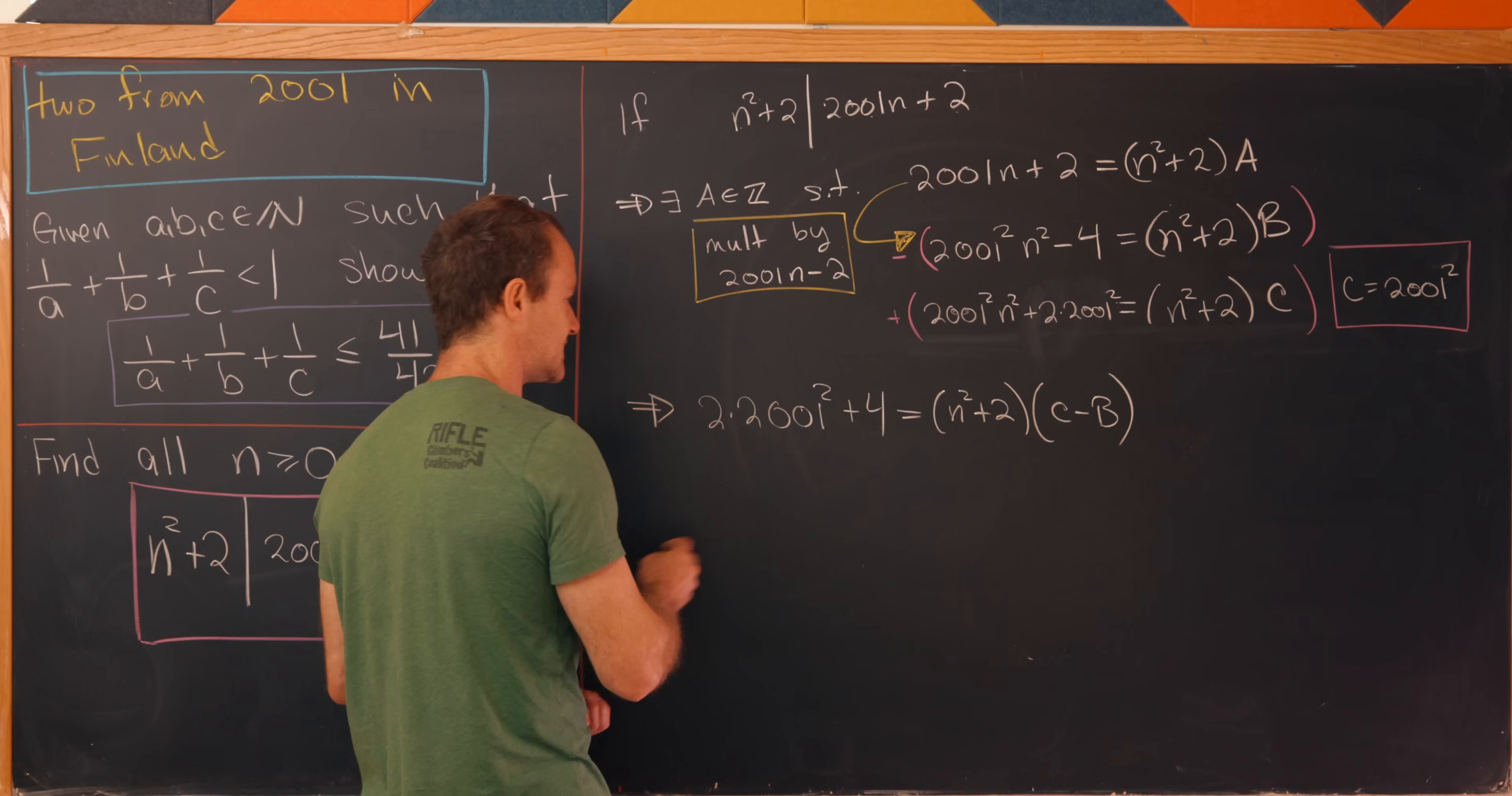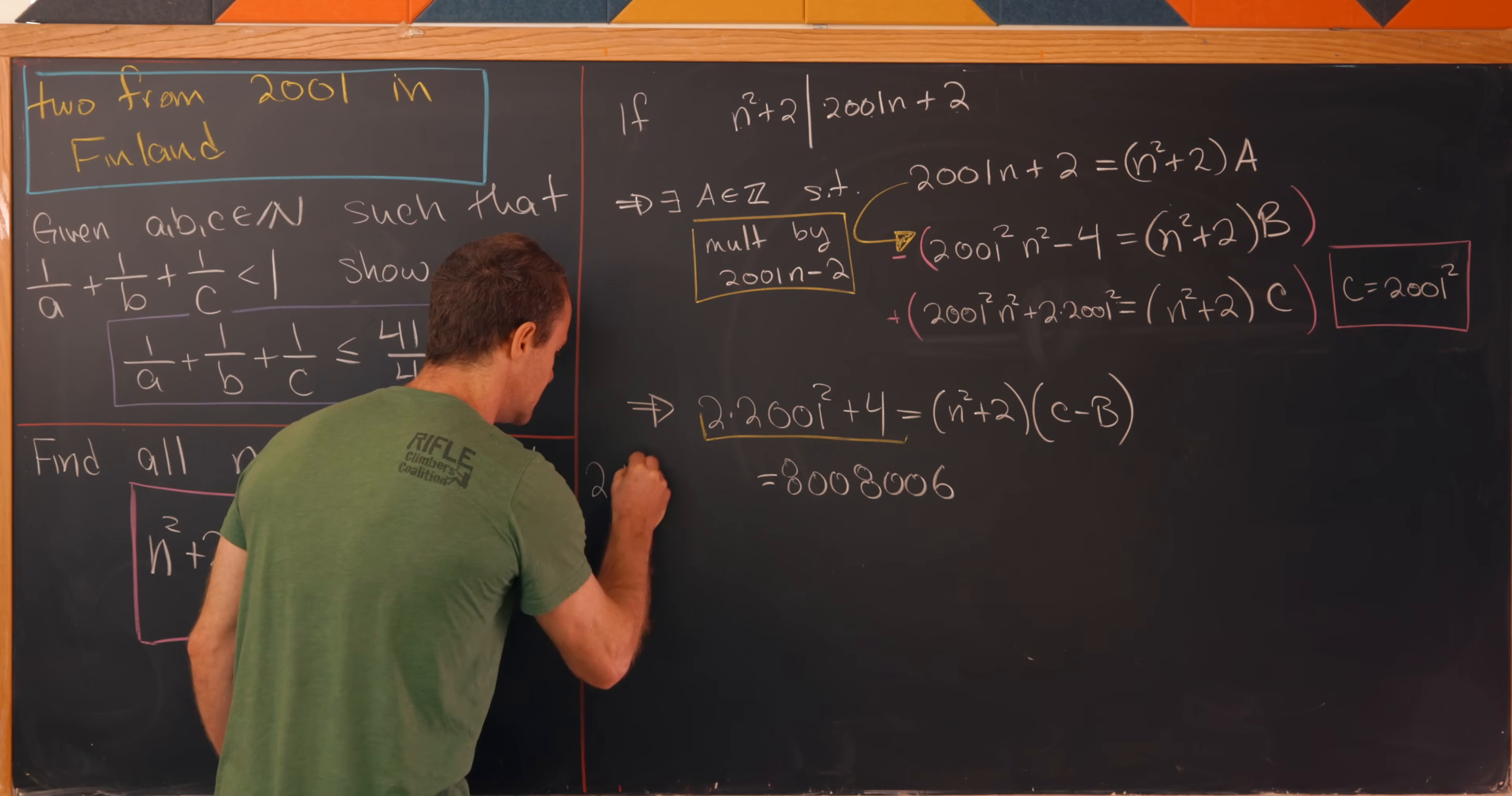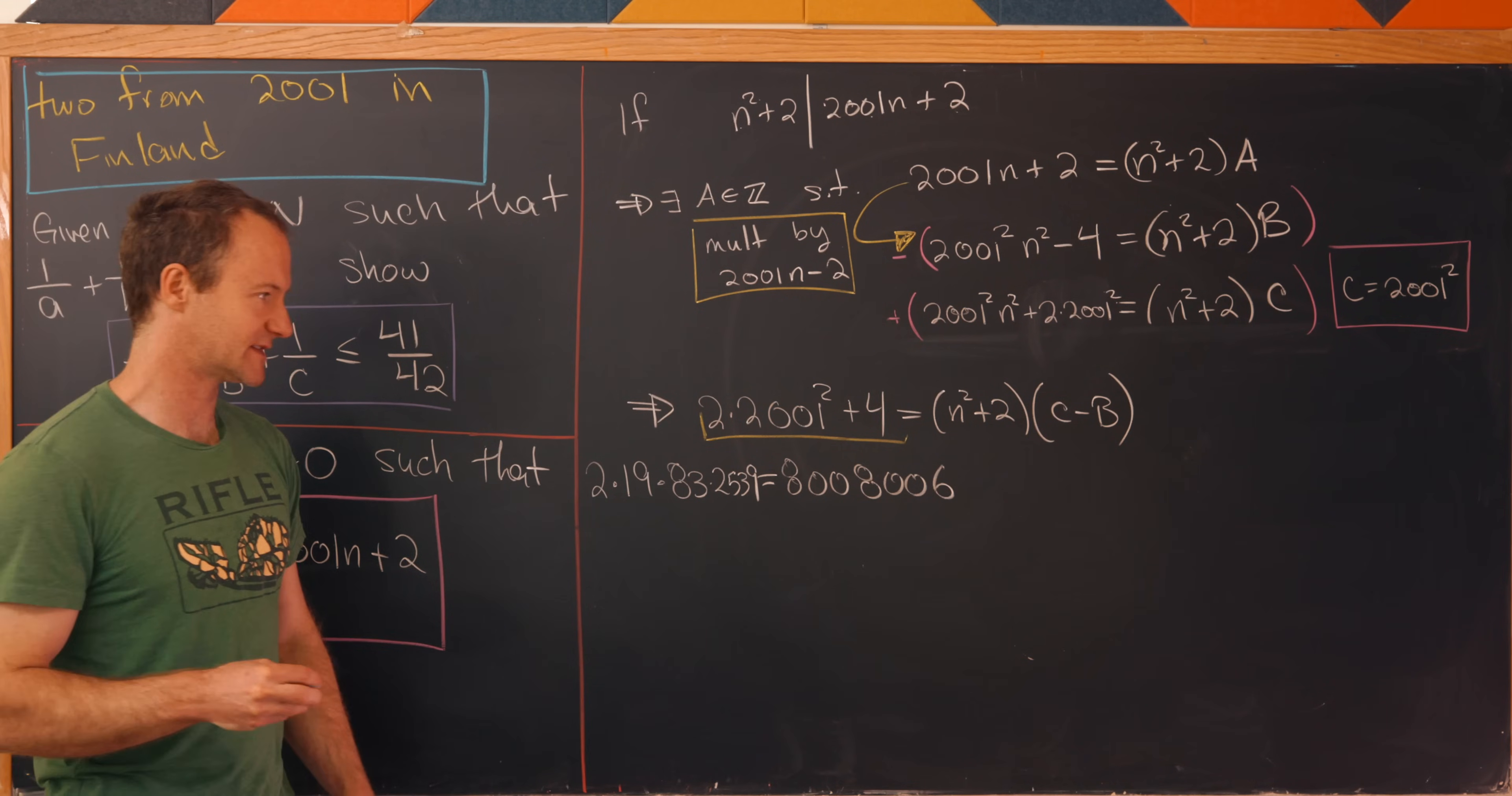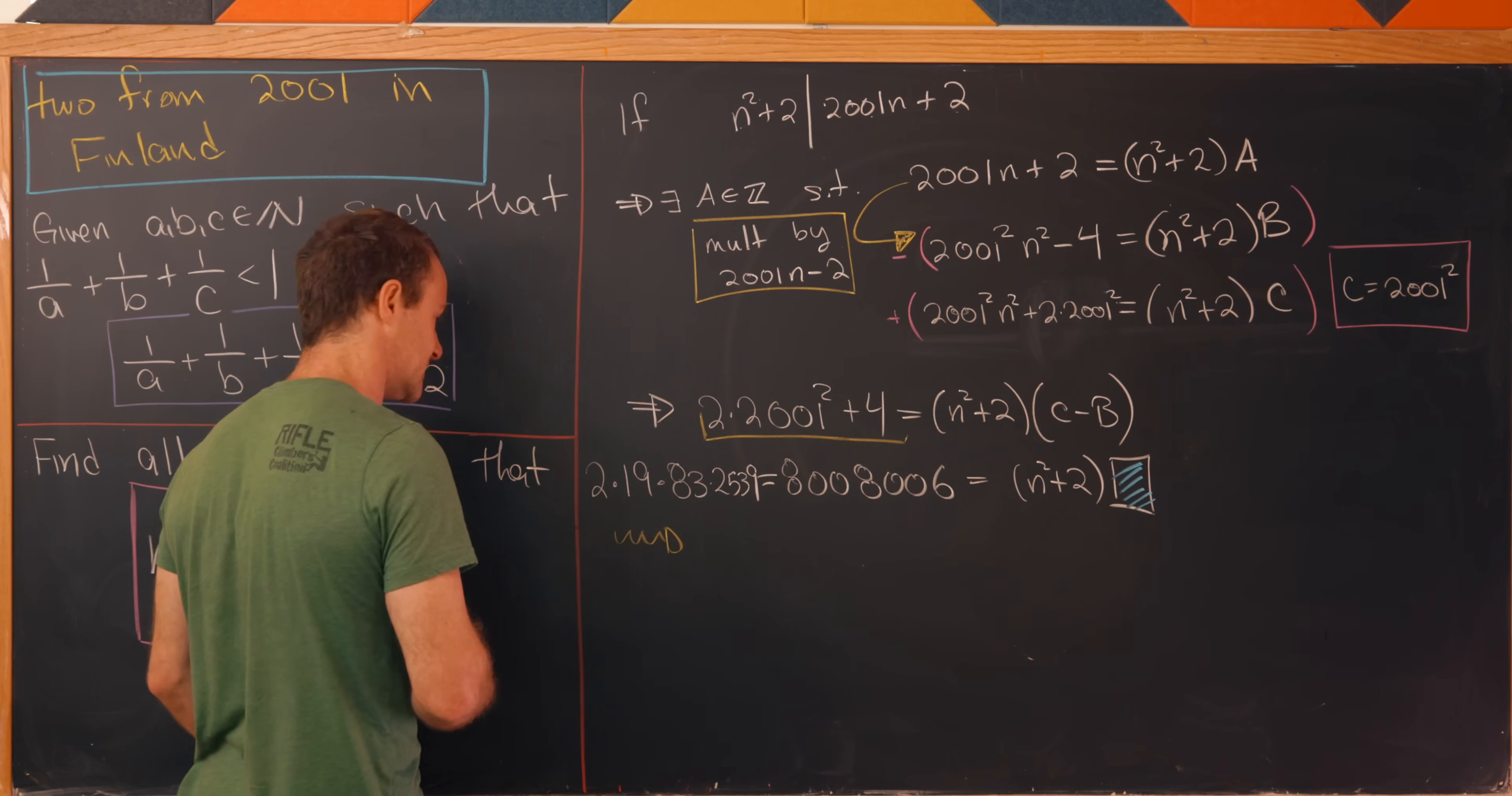But then we can simplify this over here to, well, you know, some very large number. So what is that number? Well, it's 8008006. And then that has a prime factorization as well. And that prime factorization is 2 × 19 × 83 × 2539. And I point that out because that'll be useful for an upcoming step. And then this is going to be equal to n² + 2 times something else. But that something else doesn't matter at the moment.